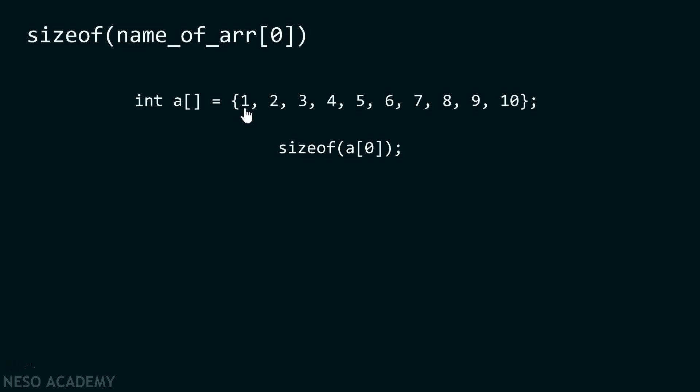And because it is an integer and we are assuming size of this integer is four bytes, therefore we know size of this element will be four bytes. Right? So, the second part of this sentence is also clear.